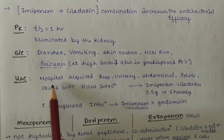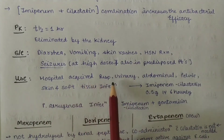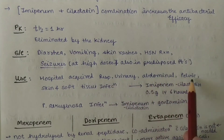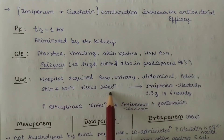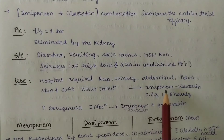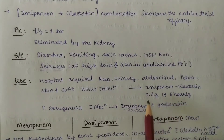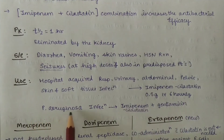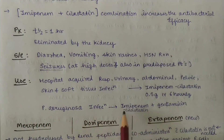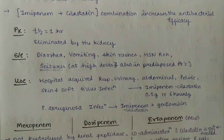Uses: hospital-acquired respiratory, urinary, abdominal, pelvic, and skin and soft tissue infections. Imipenem plus Cilastatin is given 0.5 gram IV every 6 hours. In Pseudomonas aeruginosa infection, Imipenem plus Cilastatin with Gentamicin is given.